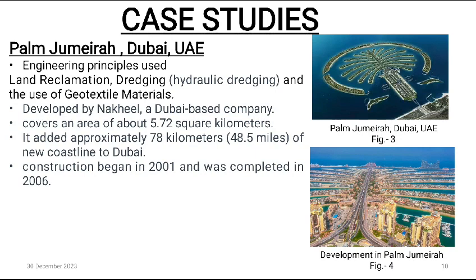Case Studies. The Palm Jumeirah, Dubai, United Arab Emirates: Engineering principles used include land reclamation and dredging involving hydraulic dredging and the use of geotextile materials. It was developed by Nakheel, a Dubai-based company. It covers an area of about 5.72 square kilometers and added approximately 78 kilometers (48.5 miles) of new coastline to Dubai. Construction began in 2001 and was completed in 2006.